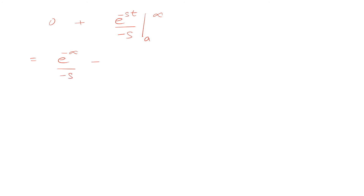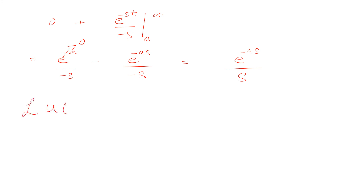Since e raised to the power negative infinity equals zero, this simplifies to e raised to the power negative as over s. So we have shown that the Laplace transform of the unit step function u(t − a) is equal to e raised to the power negative as over s. This is our proof and the final answer. Thank you guys.